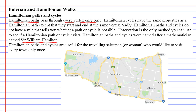A Hamiltonian cycle is basically the same as a Hamiltonian path, the difference being that you start and end at the same vertex. Sadly, Hamiltonian paths and cycles do not have a straightforward rule to check whether a path or cycle is possible. The only way to check is by observation — by tracing over edges and vertices and seeing if it works or not.